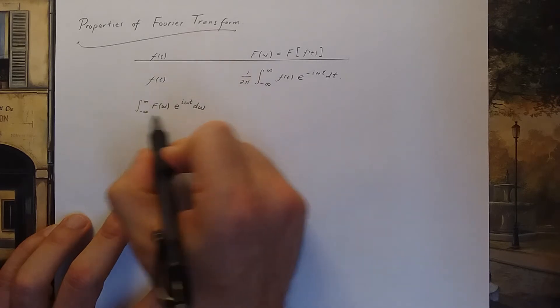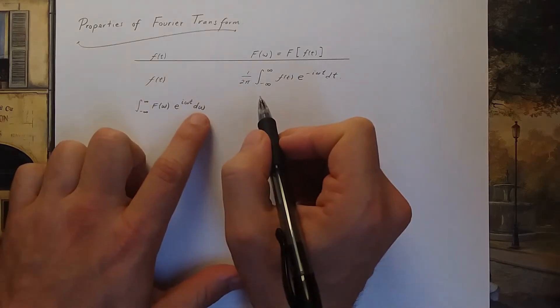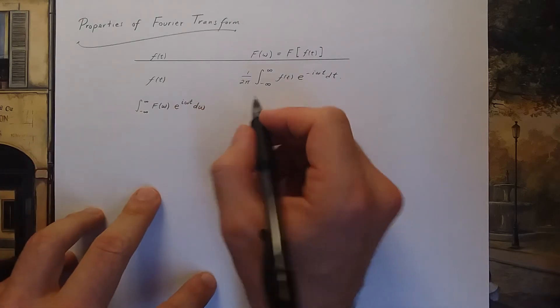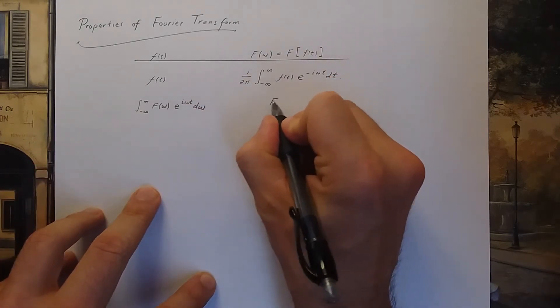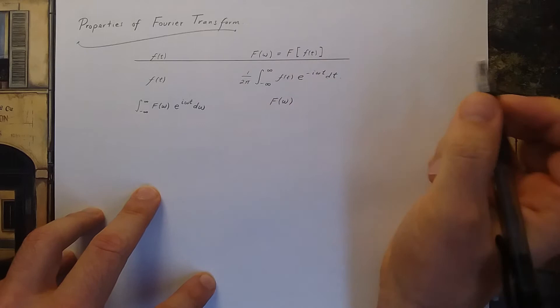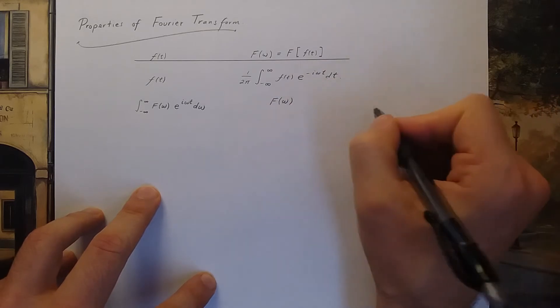If that's the starting function which is a function of t because you integrate away the omega, then the Fourier transform would just be f of omega again. So that's the Fourier relations.